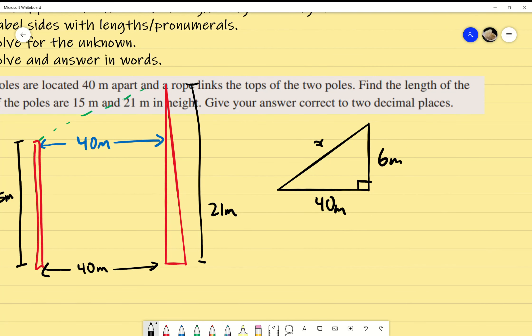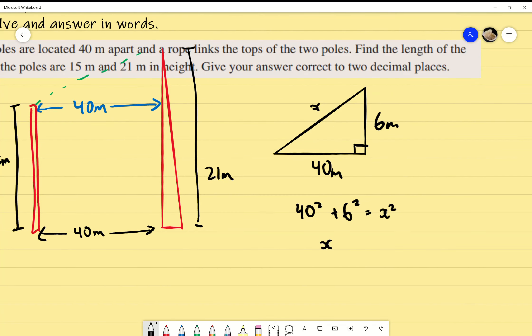Now, it's just Pythagoras all the way. I know 40 squared, and you might notice that it's not exactly to scale. That is fine as long as you've got your values in. 40 squared plus 6 squared equals x squared. I'm going to go ahead and write x equals to, and I'm going to square root 40 squared plus 6 squared. Can someone put that in the calculator for me? x equals to the square root of 40 squared plus 6 squared.